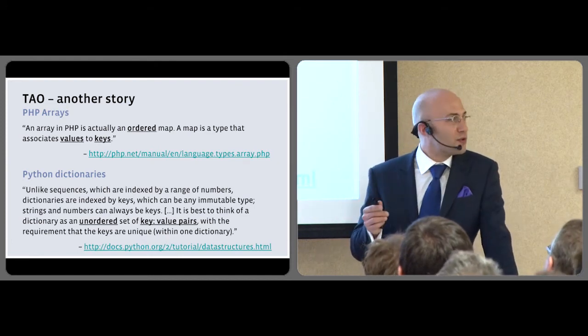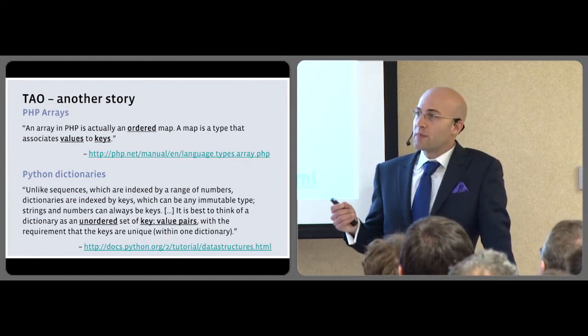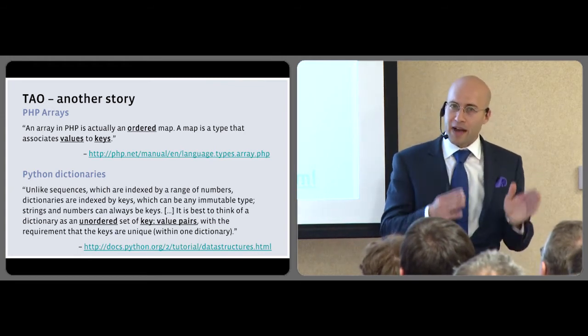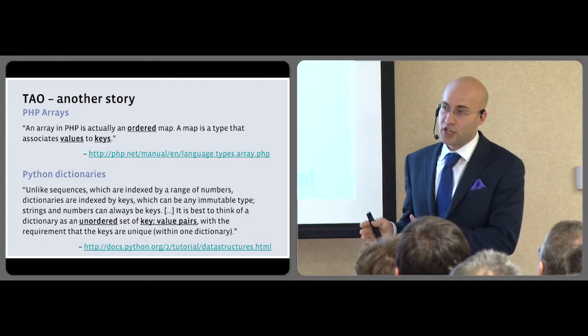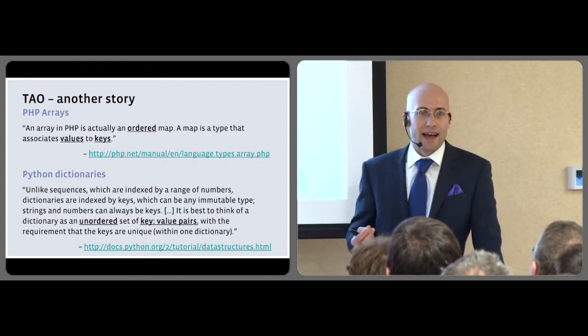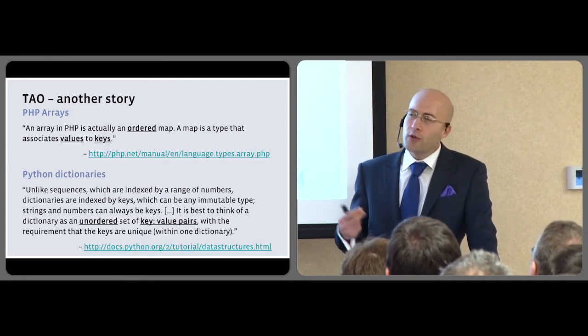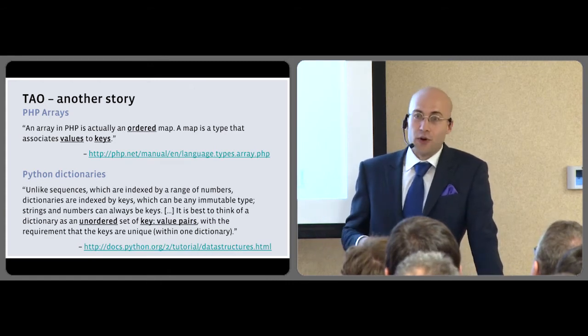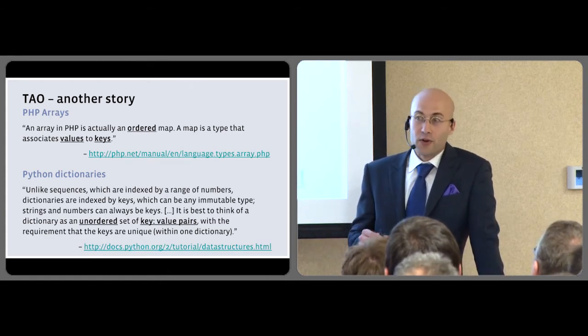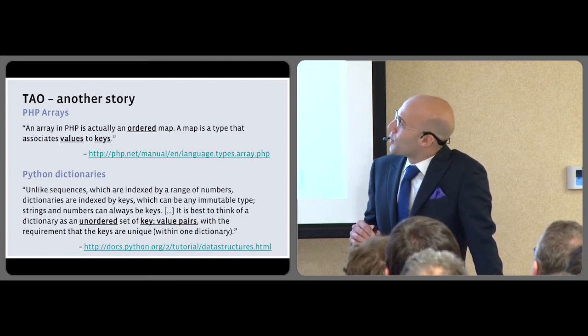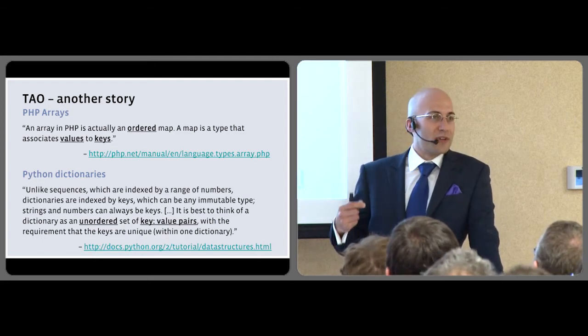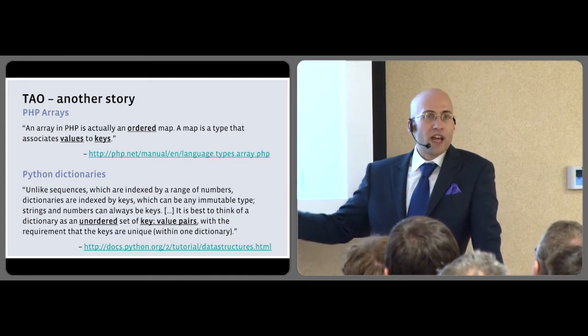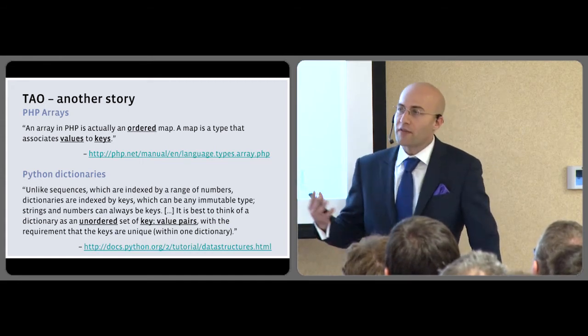So for those of you who don't know, PHP arrays are something like a mix between Python lists and Python dictionaries. You can use them as an ordered sequence, or you can use them as an associative array. Python dictionaries, as you know, do not guarantee the order of the keys. So there was this one time where we fed from one data source that was a PHP array, and we had to convert it into Python. So we have two choices. We were going to either convert it into an array or convert it into a dictionary.